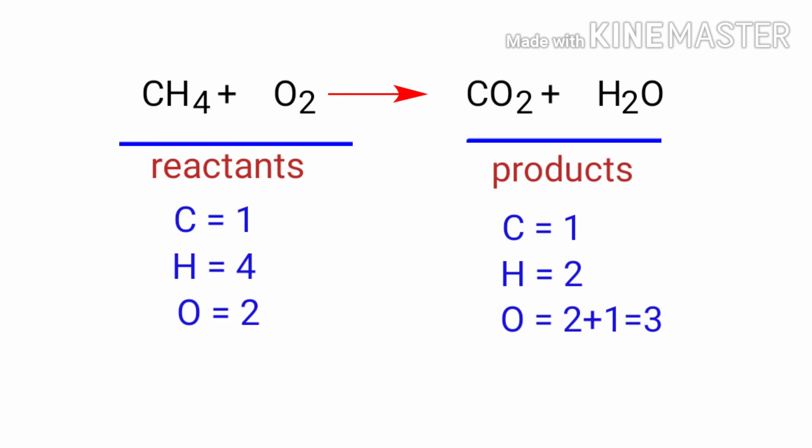On the reactants side, there are one carbon atom, four hydrogen atoms, and two oxygen atoms. On the products side, there are one carbon atom, two hydrogen atoms, and three oxygen atoms. The number of atoms are not balanced on both sides.